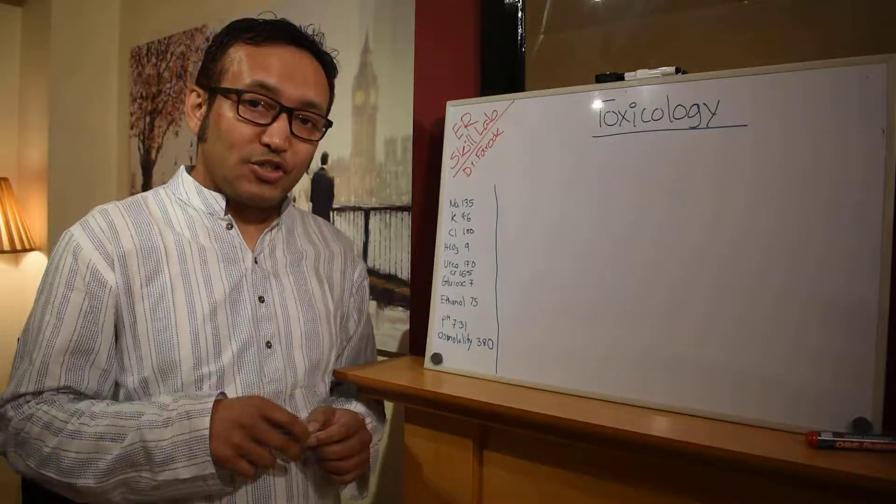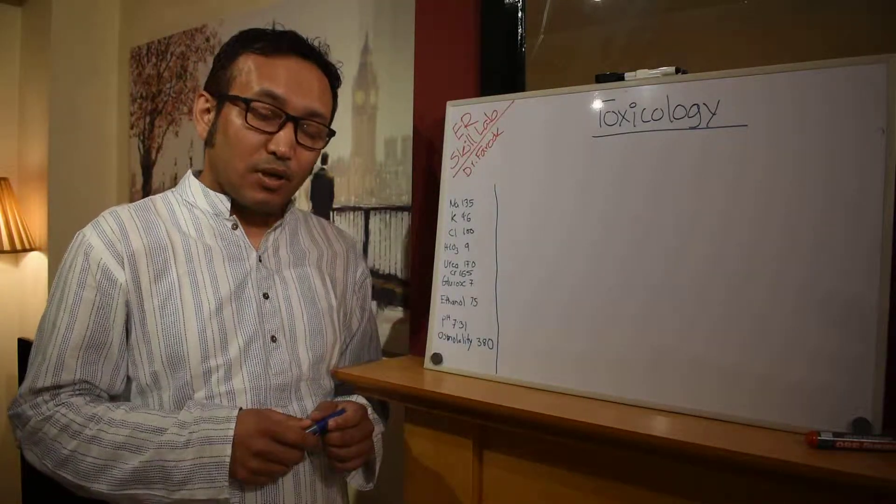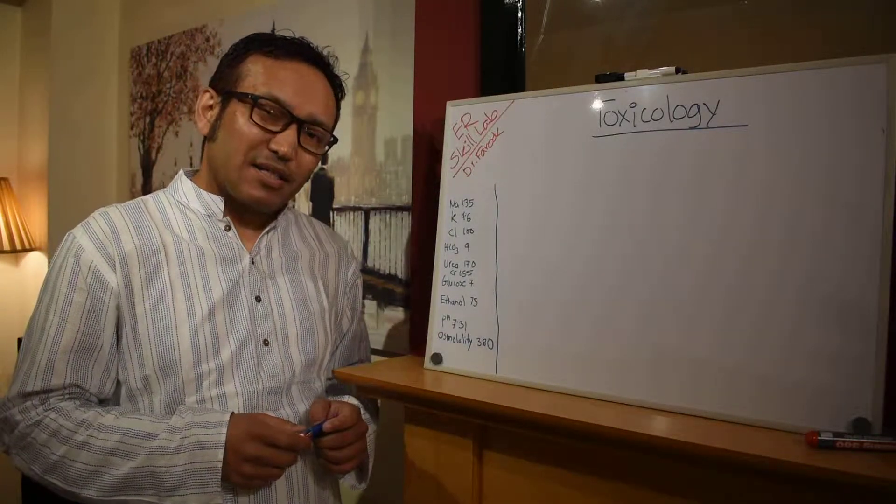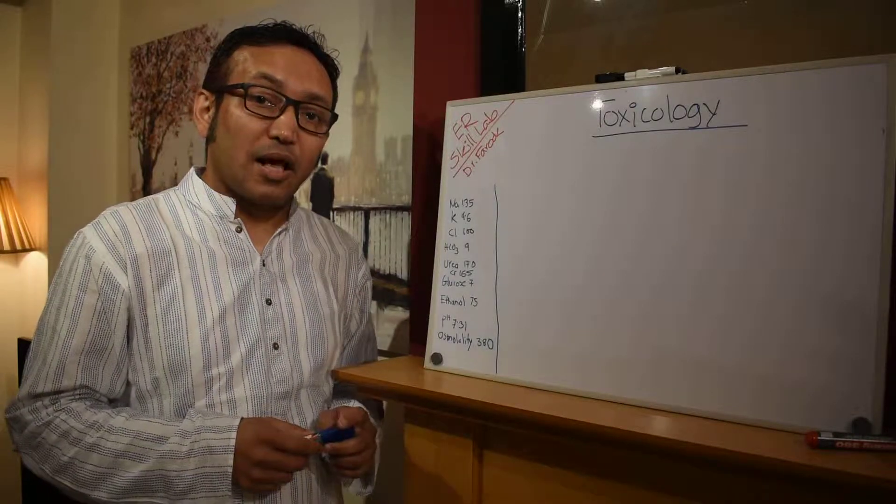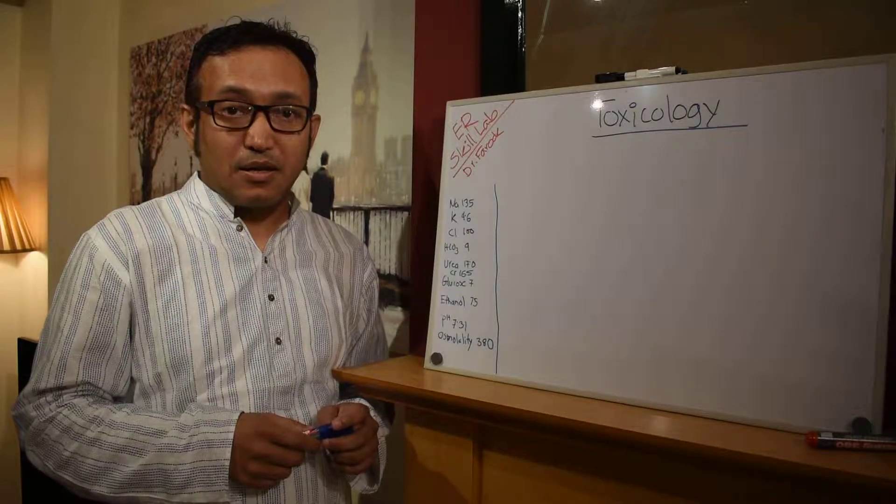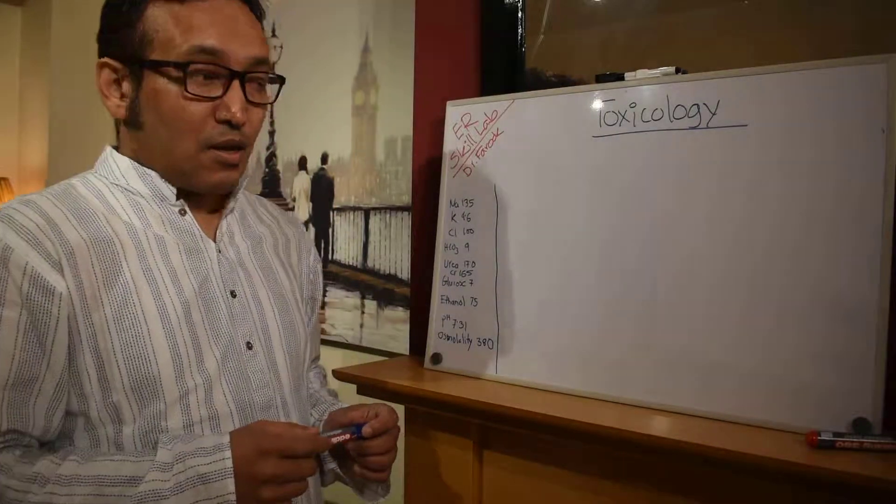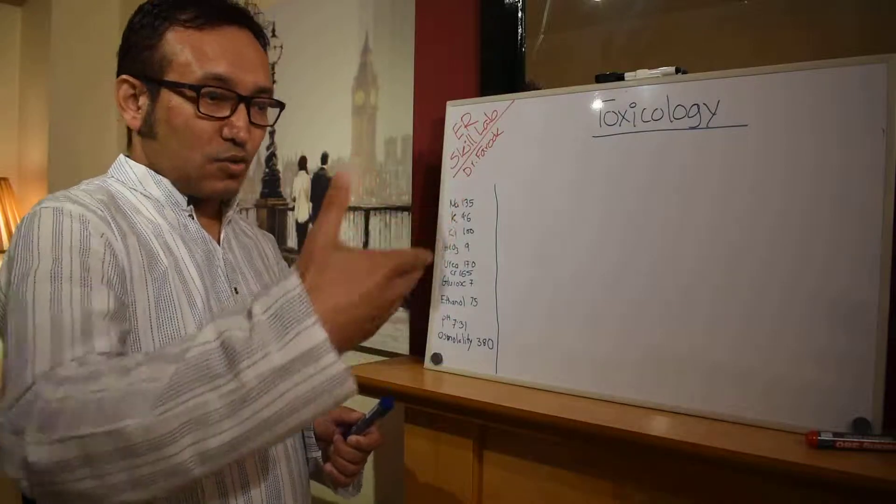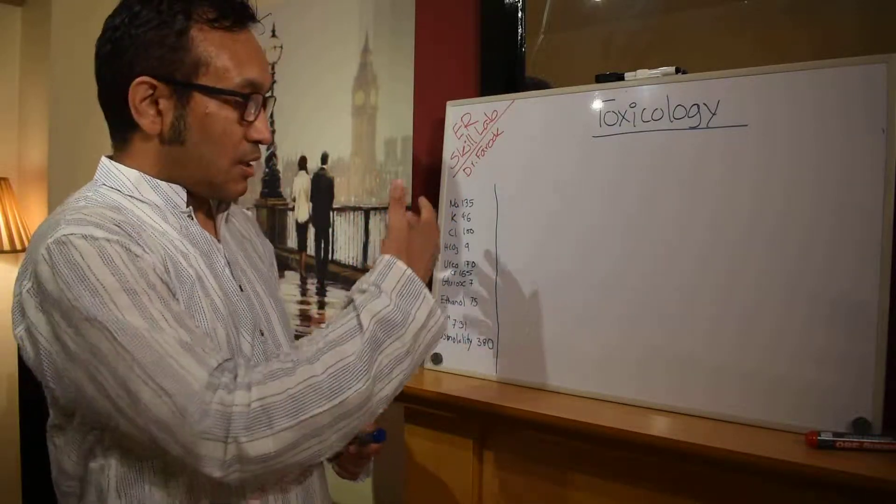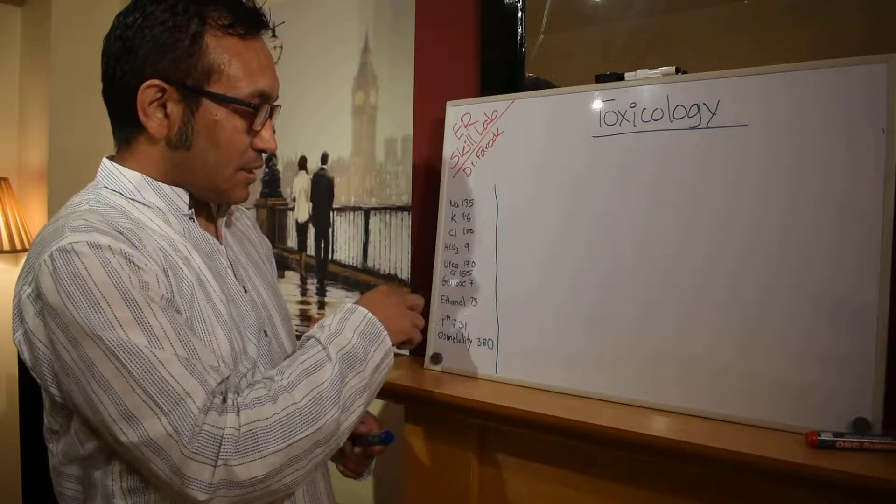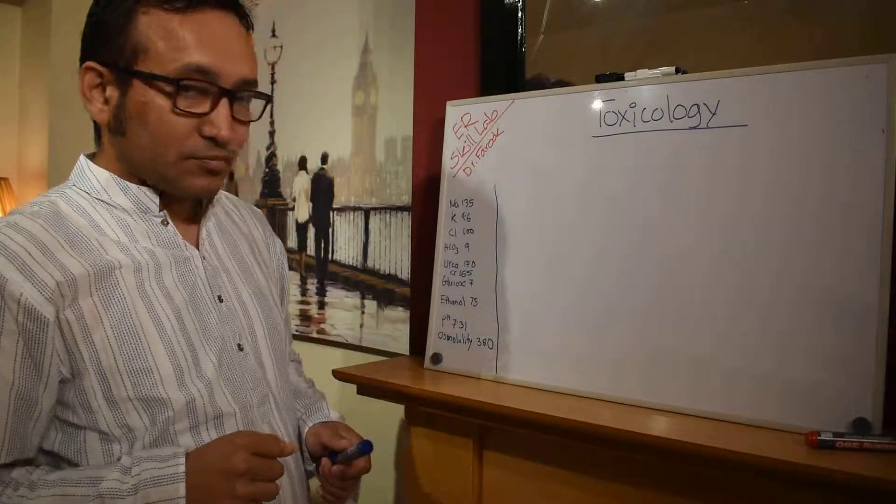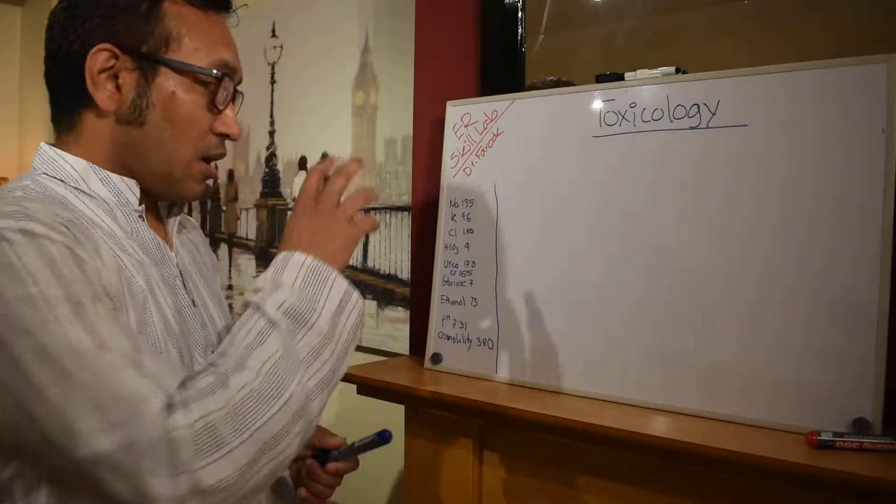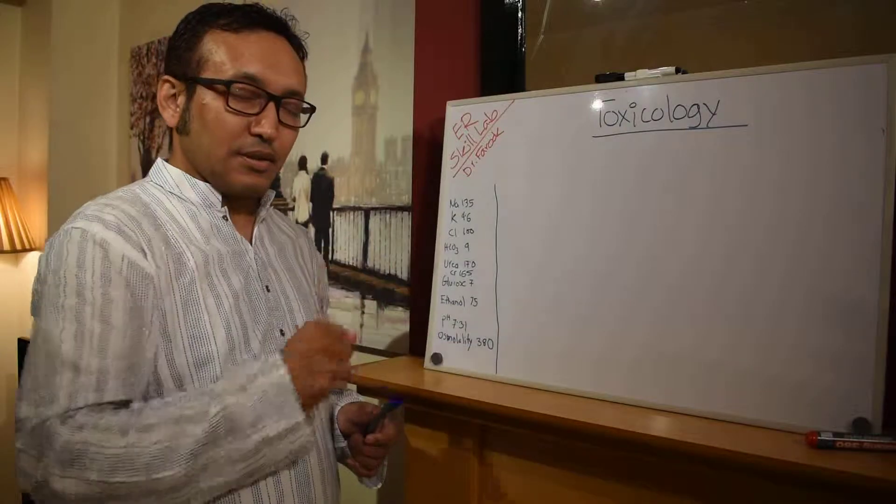Let's say this is a 42 year old gentleman, GCS 12, who had some toxic level of ethylene glycol which is also known as antifreeze. The scenario and the question will give you some values including electrolytes, urea, creatinine, pH and osmolality. I'll go into this in details later.